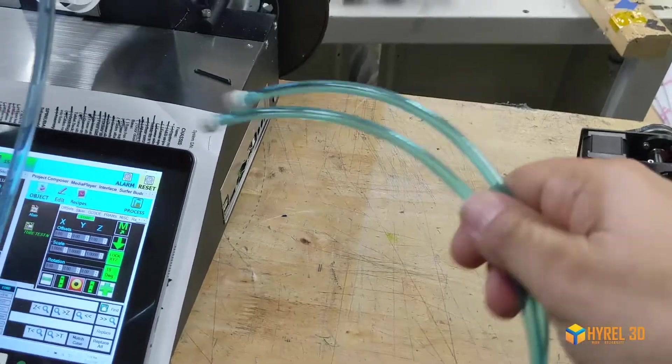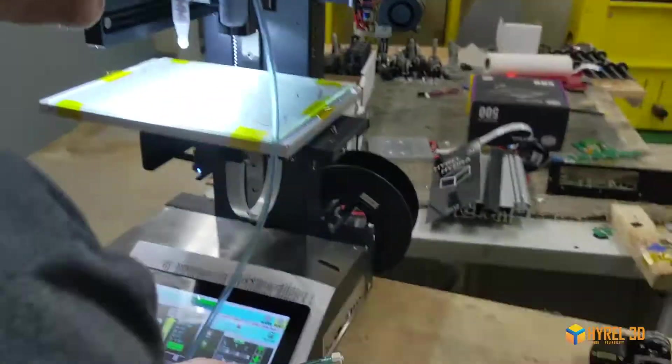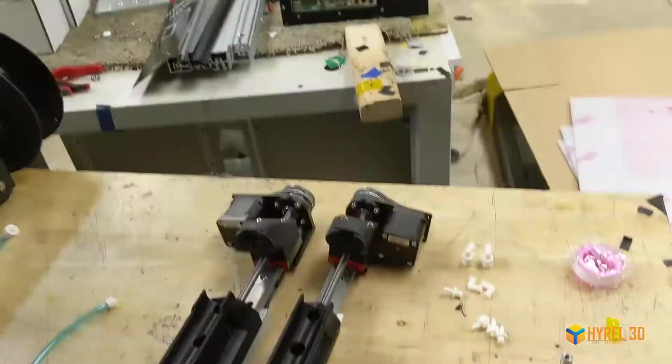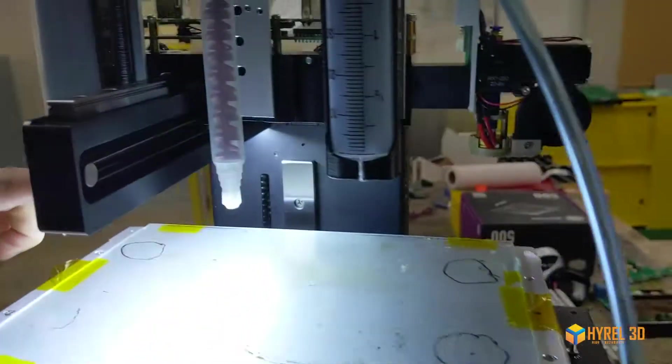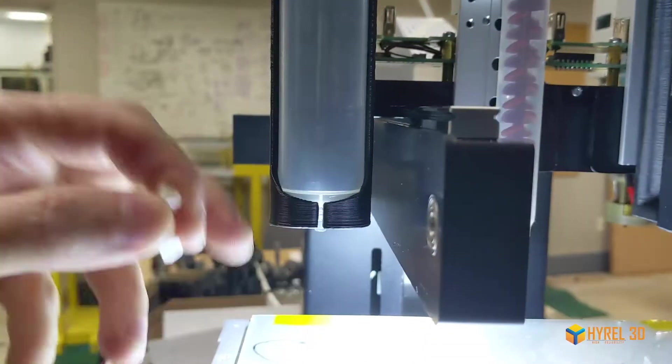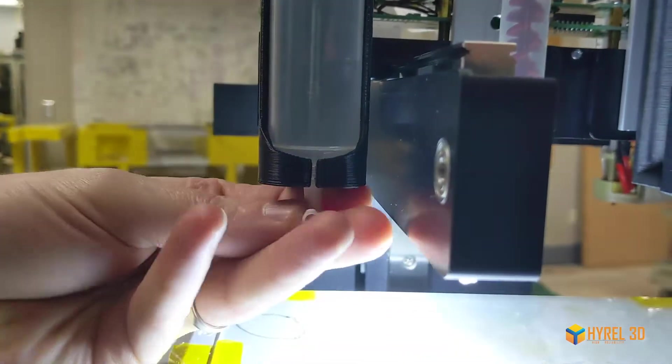Once all the heads are mounted properly, you want to connect your delivery tubing. This carries your materials from the syringes to the DMH. Because our DMH nozzle is so high, we'll use right angle connectors on our SDS heads here.